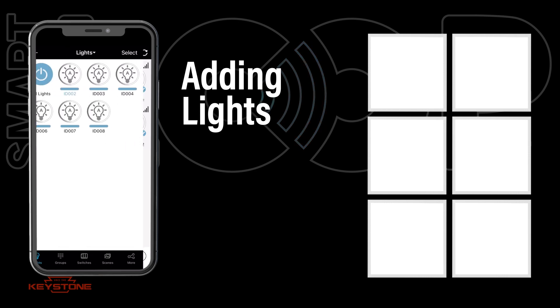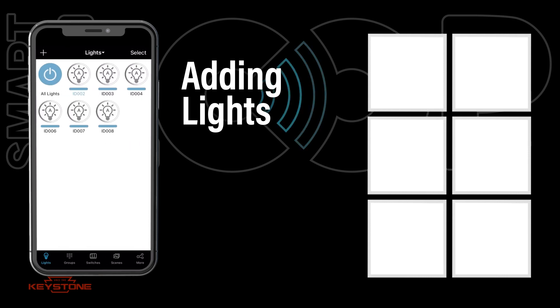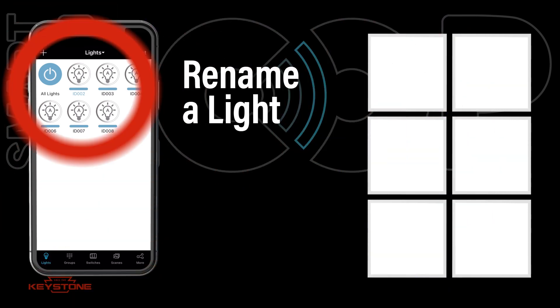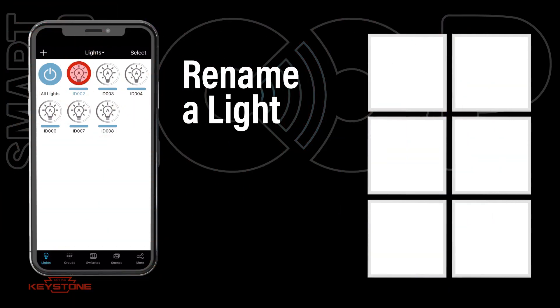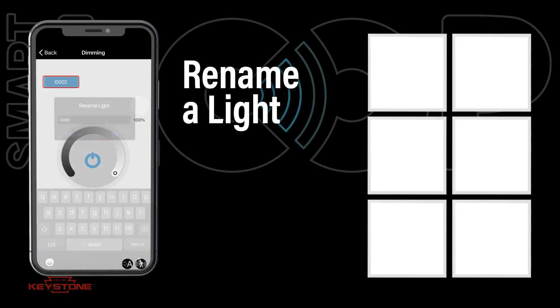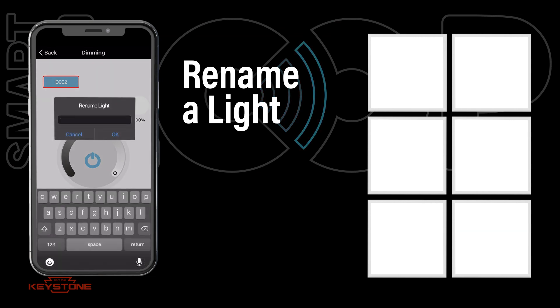The selected lights will now appear on the lights page. To rename a light, first press and hold the desired light icon to get to the dimming page. Then press the blue bar to edit the light name.